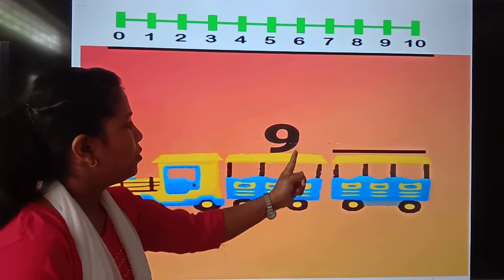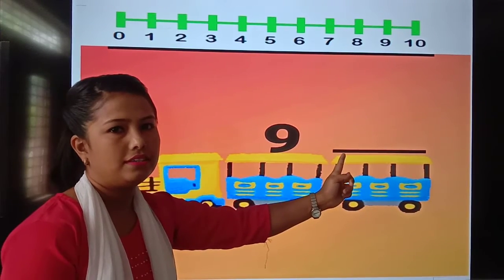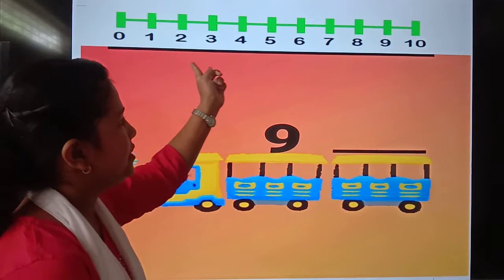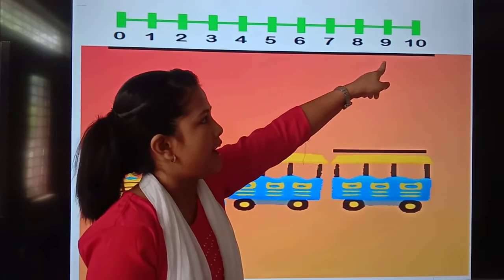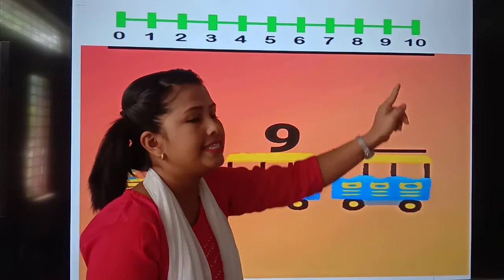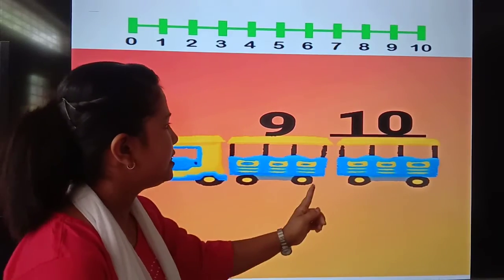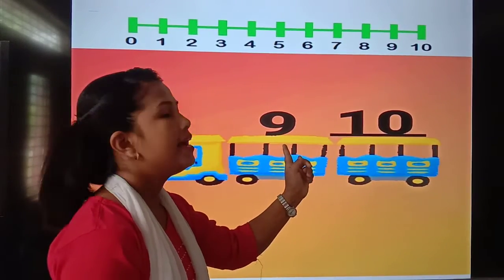Now, what comes after 9, children? Where is 9? Here is 9. After 9 is 10. 1, 0, 10. 10 comes after 9.